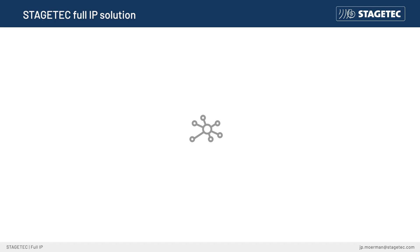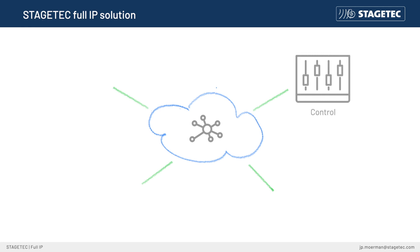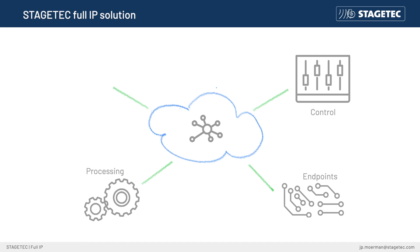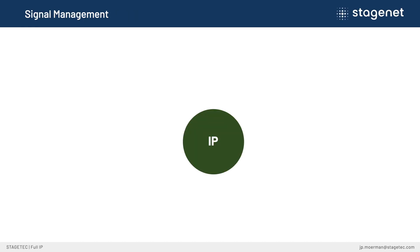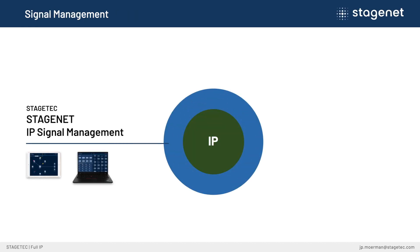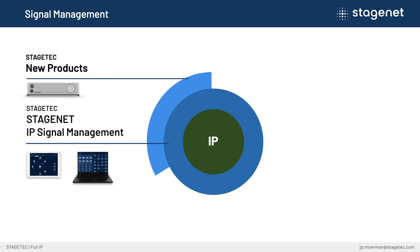When considering a full IP-based system, you have to bear in mind the four elements we have to provide. First, connecting your control services over IP; access to the processing cores; transporting your content from and to the edge points in an IP format; and finally controlling your network resources. A signal management system is being developed at StageTech to control our new range of IP products as well as our existing systems.